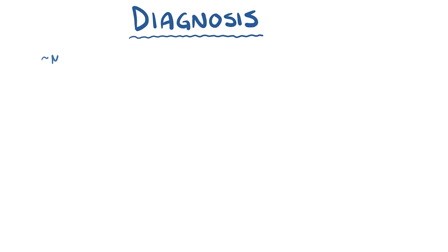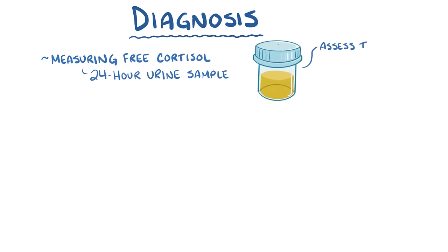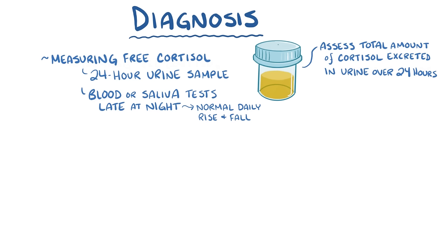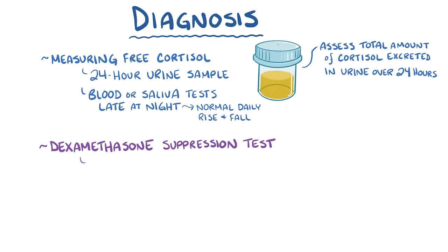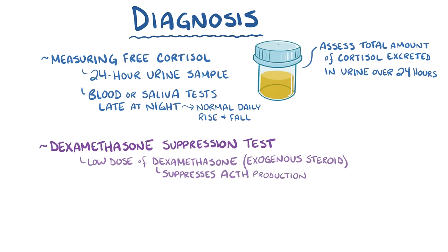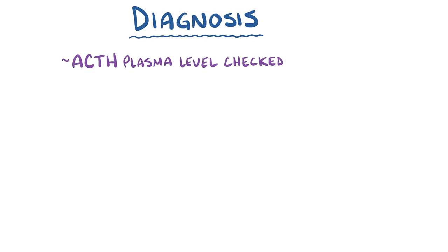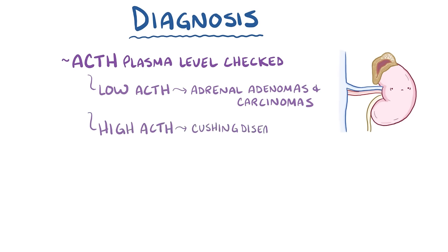Diagnosis of Cushing syndrome is initially based on measuring the free or unbound cortisol in a 24-hour urine sample, in order to assess the total amount of cortisol excreted over a 24-hour period. Alternatively, blood or saliva tests late at night can help check if there's a normal daily rise and fall of cortisol levels. Another option is the dexamethasone suppression test, where a person is given a low dose of dexamethasone—an exogenous steroid that suppresses ACTH production in the pituitary gland. Normally that should cause a decrease in serum cortisol levels, but if Cushing syndrome is caused by endogenous cortisol production, serum cortisol levels should remain unchanged. If that test is positive, the next step is to determine the exact cause, and ACTH plasma levels can be checked. Low ACTH levels can be seen in adrenal adenomas and carcinomas, whereas high ACTH levels can be seen in Cushing disease and ectopic ACTH production.